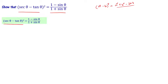Looking at the RHS, we see sin theta involved. The key trigonometric identity relating sin theta and cos theta is sin squared theta plus cos squared theta equals 1. So our approach is to convert everything on the LHS into sin and cos form, which will make this problem easy to solve.